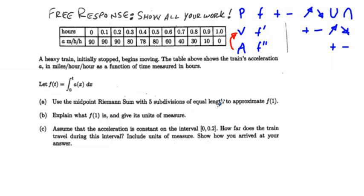And so we get here to part B. We say f of one is going to be the speed or velocity. And we have miles per hour per hour acceleration.